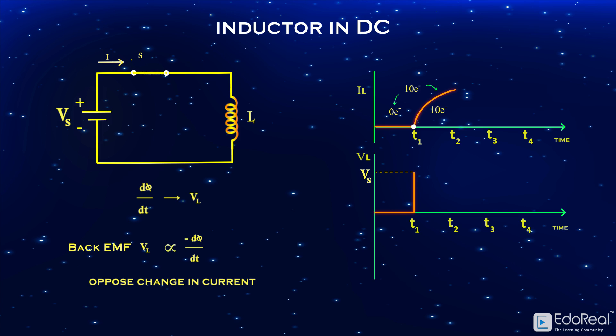So at time t2, there will be some induced voltage that opposes change in current. This induced voltage will be less than Vs.